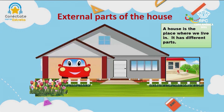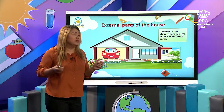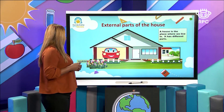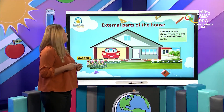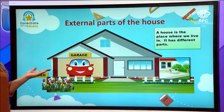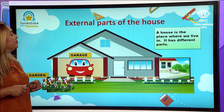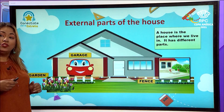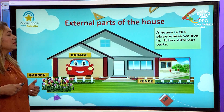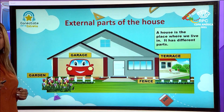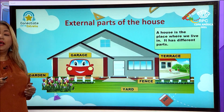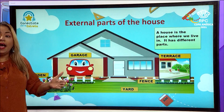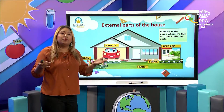The first thing that we have to remember is that a house is a place where we live in. It has different parts. For example, there is a garden where we plant flowers. We have the garage and we can put the car in the garage. We have a fence to protect the privacy of the house, and we have a terrace where you can enjoy a picnic with your family. And obviously we have a yard, a yard where you can play with your brother, with your sister, with your friends.